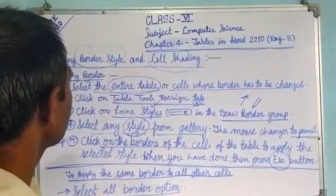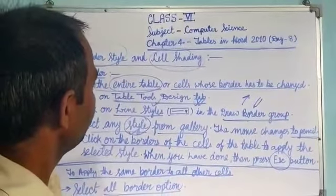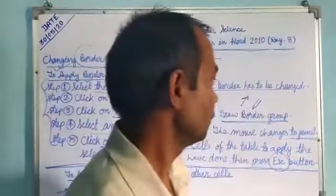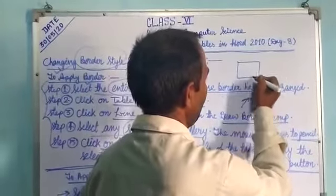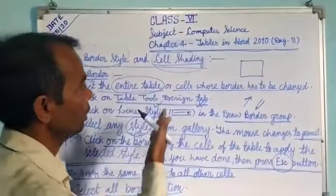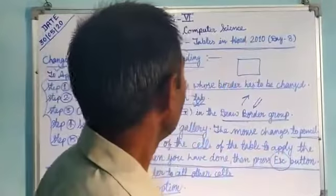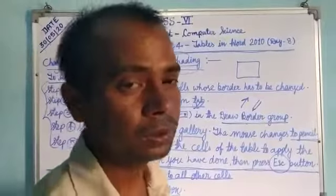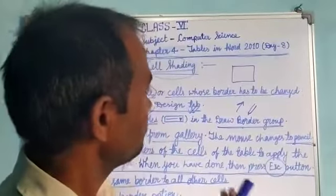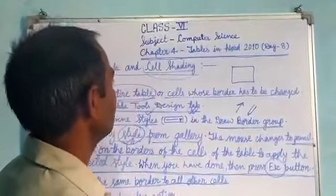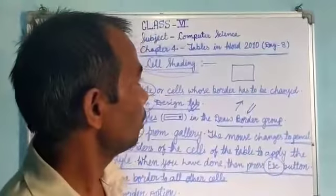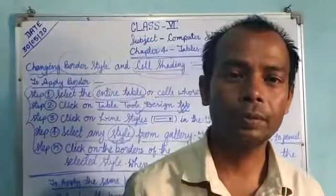So we have learned how to change border styles. In the next video, we will learn about cell settings — how to change cell colors. Generally, cells have a white background, but we can change the colors and settings of the cells according to our requirements, so that the data looks beautiful and attractive. How was this video? Please write your comments. Thank you.